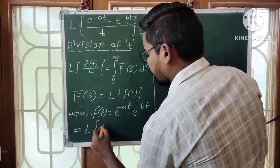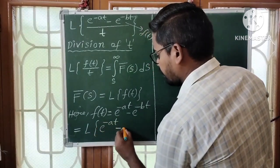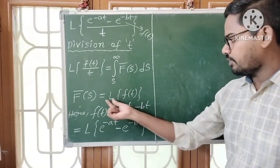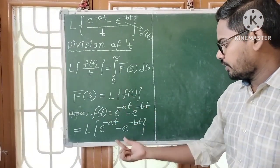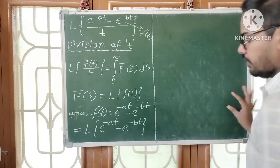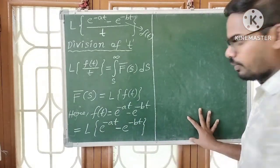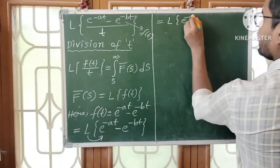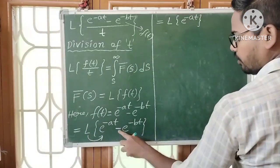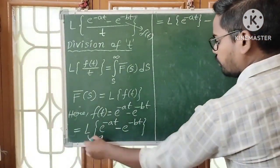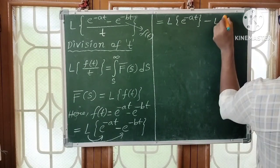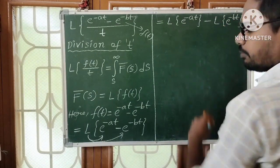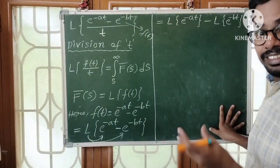So L{e^(-at) - e^(-bt)}: according to the linearity property (distributive property), distribute the Laplace transform to get L{e^(-at)} minus L{e^(-bt)}.